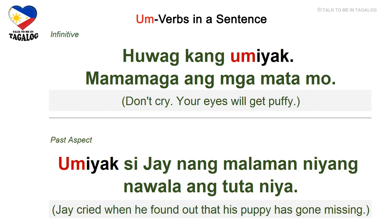Past aspect: umiyak si Jay nang malaman niyang nawala ang tuta niya. Umiyak means cried, malaman is found out, nawala is gone missing, and tuta means puppy — Jay cried when he found out that his puppy had gone missing.